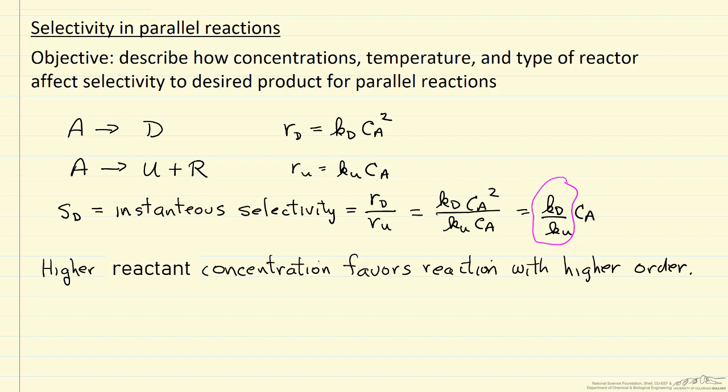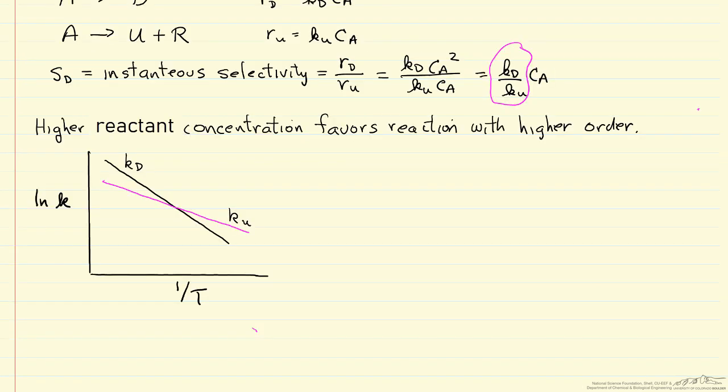Let's look at a plot of the log of the rate constant versus inverse temperature so we can make this comparison. I've drawn the case where the activation energy for the desired reaction is larger than the activation energy for the undesired reaction.